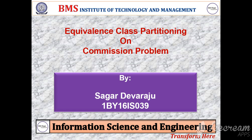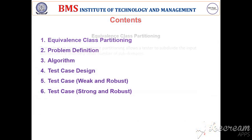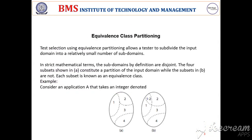My name is Sahagat Devraju and I'll be talking about Equivalence Loss Partitioning on Commission Problem. Equivalence Loss Partitioning allows the tester to divide a large input domain into a relatively smaller number of subdomains.